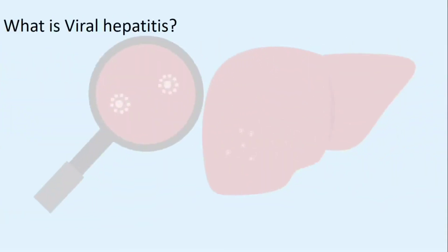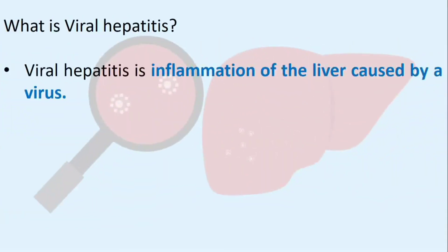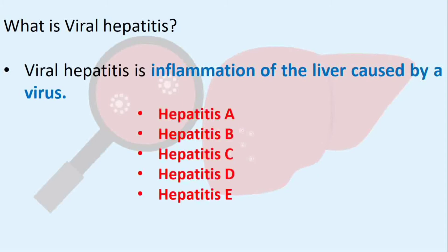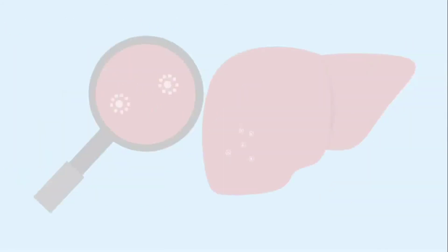What is viral hepatitis? Viral hepatitis is inflammation of the liver caused by a virus. There are 5 major different hepatitis viruses: Hepatitis A, Hepatitis B, Hepatitis C, Hepatitis D, and Hepatitis E. Are you at risk for viral hepatitis?